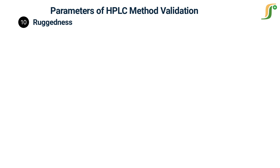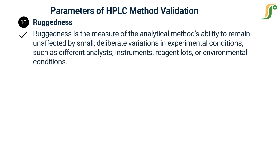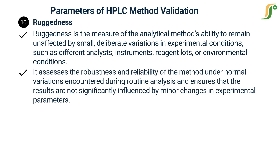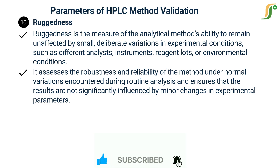The tenth parameter is ruggedness. Ruggedness is the measure of the analytical method's ability to remain unaffected by small, deliberate variations in experimental conditions, such as different analysts, instruments, reagent lots, or environmental conditions. It assesses the robustness and reliability of the method under normal variations encountered during routine analysis and ensures that the results are not significantly influenced by minor changes in experimental parameters.